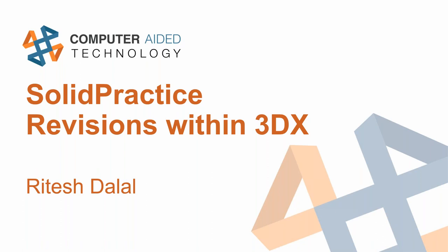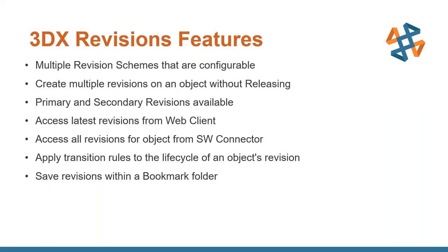My name is Ritesh Dhalal. I'm with CATI. We're going to go through some revisioning within the 3DX platform — a high-level overview of how revisioning works. In the 3DX platform, you can have multiple revision schemes; there are multiple to choose from and it's all configurable. You can create multiple revisions on an object without releasing that object. If you have an object in a frozen state, you can have multiple revisions while in that state — it does not have to be released. You can have primary and secondary revisions as well.